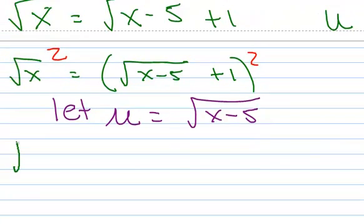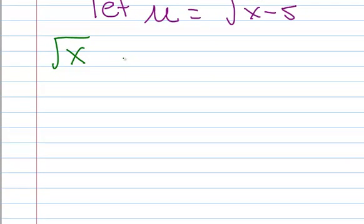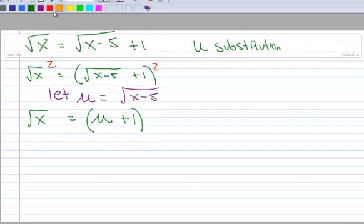So now my equation looks like this, the square root of X on the left side, and over here I've got U plus 1, and it can't get any simpler looking than that. The technique is the same, square both sides.